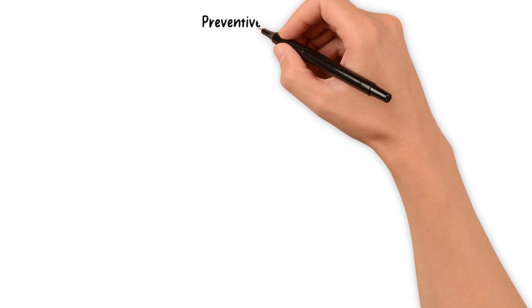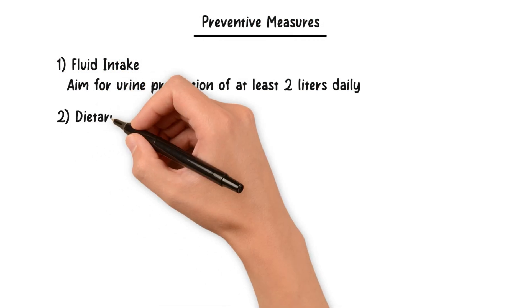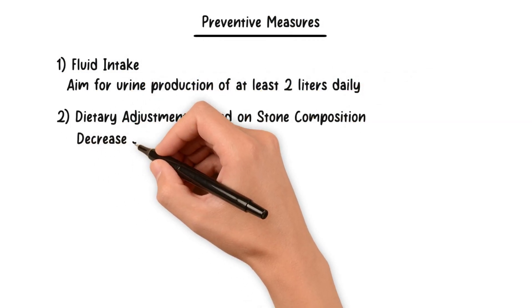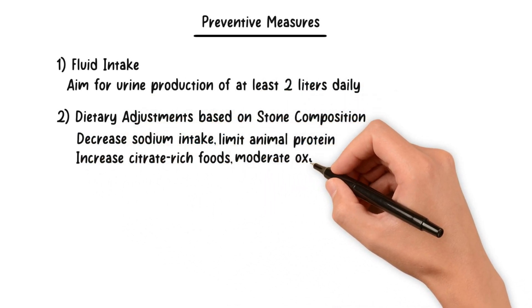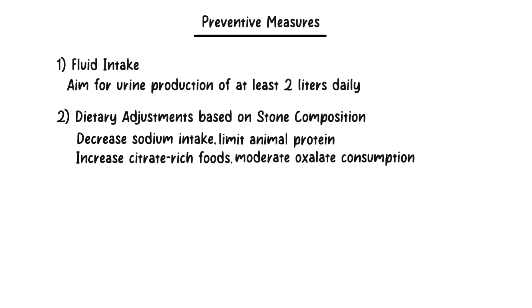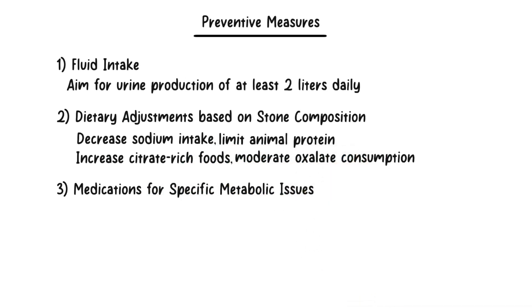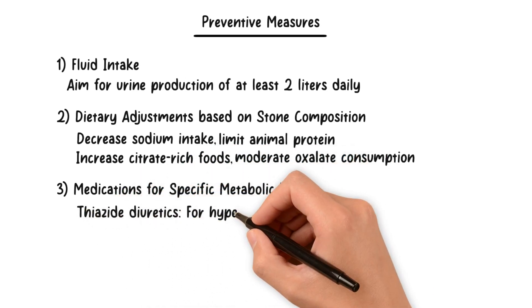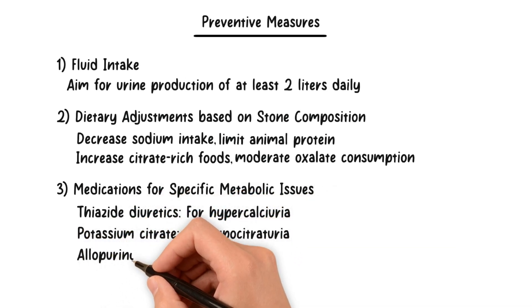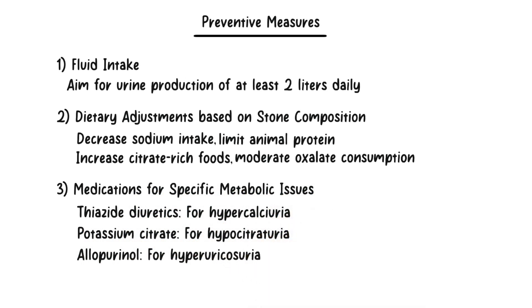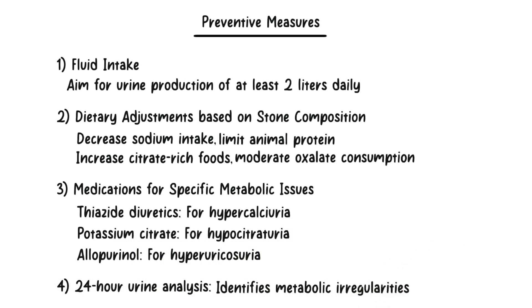To minimize kidney stone risks, ensure a fluid intake producing at least 2 liters of urine daily. Dietary adjustments — like reduced sodium and animal protein, increased citrate-rich foods, and moderated oxalate intake — may be suggested based on stone composition. Some may need medications for particular metabolic issues causing stone formation, such as thiazide diuretics for hypercalciuria, potassium citrate for hypocitraturia, or allopurinol for hyperuricosuria. A 24-hour urine analysis can pinpoint metabolic irregularities, guiding diet or medication adjustments.